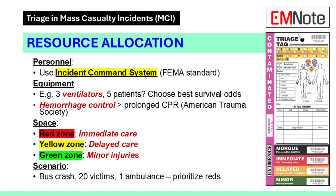Tourniquets save more lives per minute than chest compressions when you're stretched thin. For example: you've got three ventilators, five patients in respiratory failure — pick the three with the best shot, younger patients, less trauma. It's not fair; it's effective. Third, space — set up zones: red for immediate, yellow for delayed, green for minor. During the 2010 Haiti earthquake, field hospitals used this to manage thousands. In a bus crash with 20 victims and one ambulance, triage tags three red and two black — ventilate the reds with the strongest vitals, send them first. The blacks get pain meds if you can, but they're last priority. That's rationing in action.